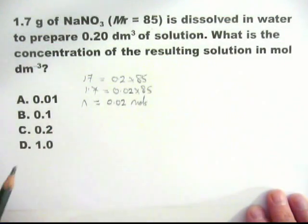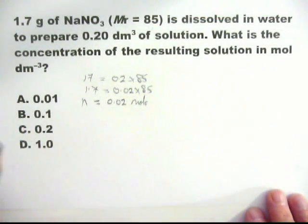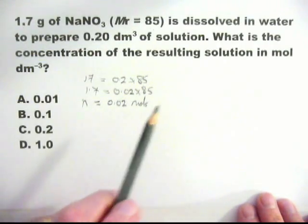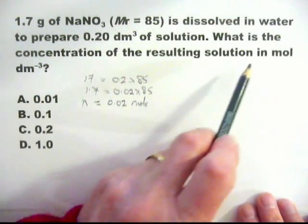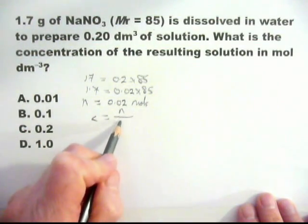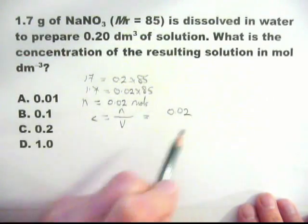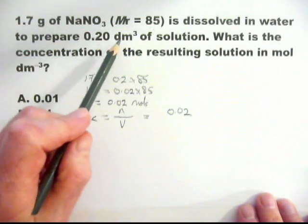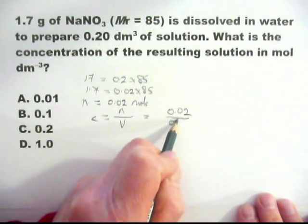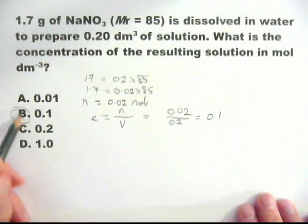You don't have to write all of this down, but I'm just showing you that that simple relationship must be seen by you immediately in order to do this question. The other formula you need to remember is concentration equals N over V. We know N, which is 0.02. They give you the volume in the correct unit, decimetres cubed. So 0.02 divided by 0.2, which equals 0.1. And that is the answer.